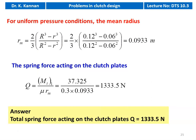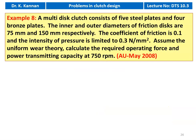The total spring force acting on the clutch plate Q equals 1333.5 Newton. Example number 8 from May 2008 question paper: A multi-disc clutch consists of five steel plates and four bronze plates. The inner and outer diameter of the friction disc are 75 mm and 150 mm respectively. The coefficient of friction is 0.1, and the intensity of pressure is limited to 0.3 Newton per mm square. Assuming uniform wear theory, calculate the required operating force and the power transmitting capacity at 750 rpm.